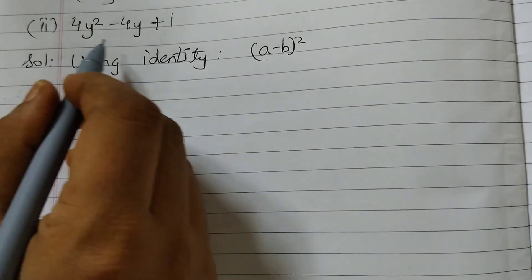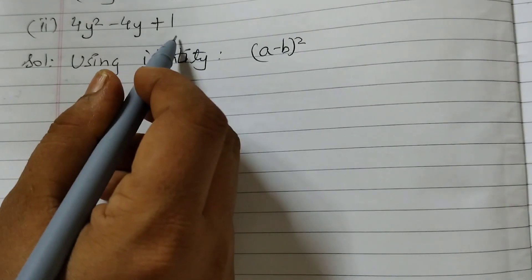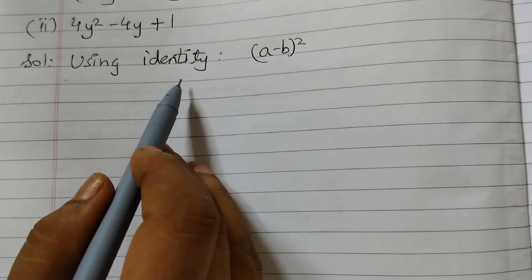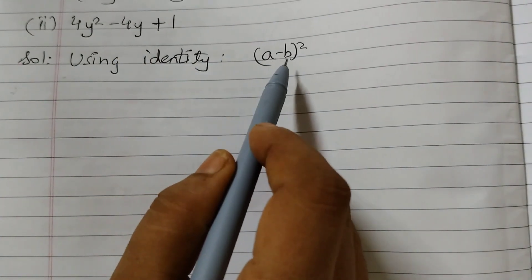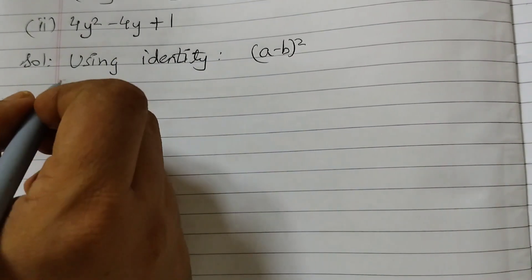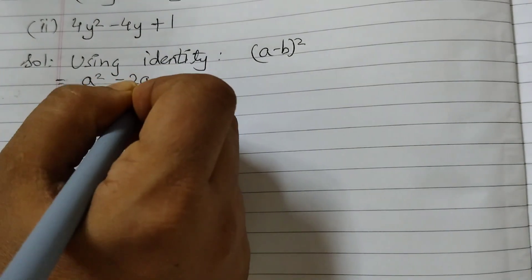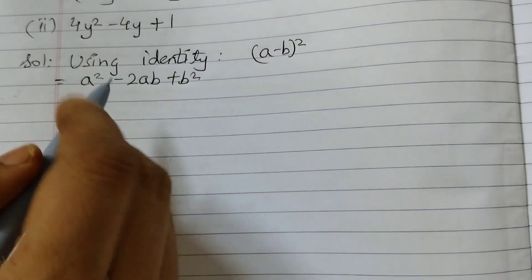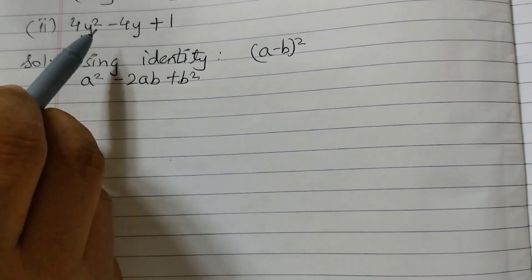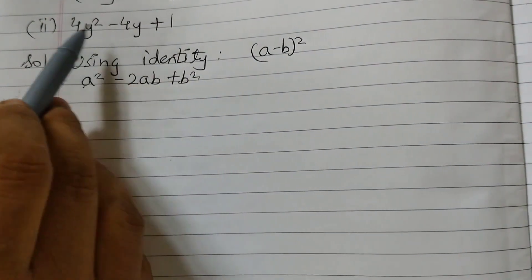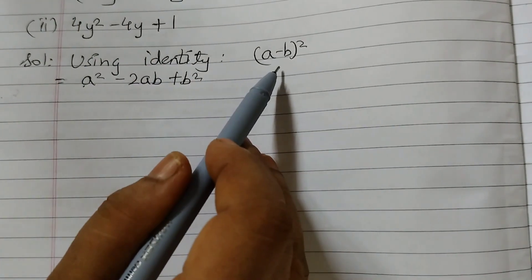Second one: 4y squared minus 4y plus 1. Here there is a minus sign and a plus sign. So we will use the identity a minus b the whole squared which equals to a squared minus 2ab plus b squared. Minus sign plus sign, minus sign plus sign. Now we will compare these and we will try to get this polynomial in this form.